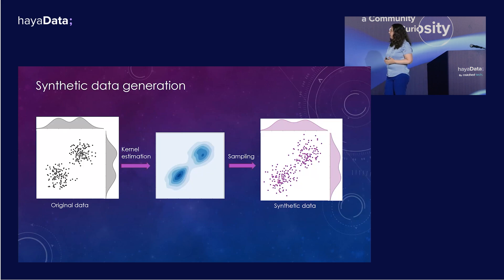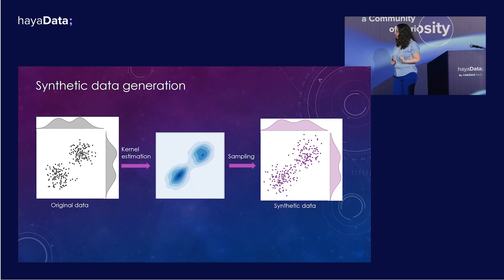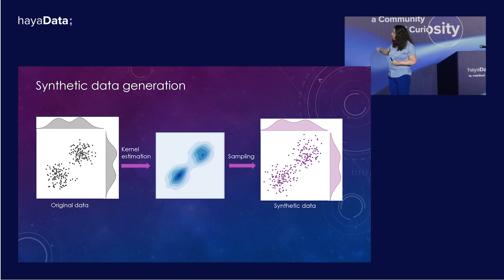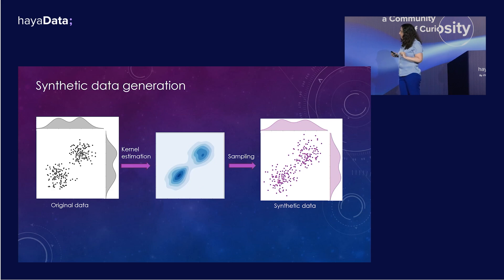So how do we generate synthetic data? There are a lot of solutions out there, some even open source, but they all have high-level things in common. You start from an original data set on the left. What you do is try to estimate the probability density. Then you forget about the original data — you have only this density — and from this, you resample. You're left with clusters that look very much like the original, but they don't have the same exact observations.